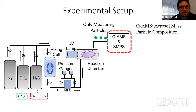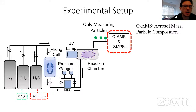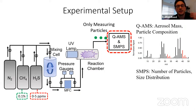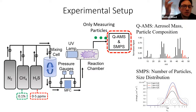The quadrupole aerosol mass spectrometer (QAMS) tells us the aerosol mass — how much particle mass we're making and the total mass — and also the particle composition from the mass spectra, giving an aerosol mass spectrum. The SMPS tells us the number of particles and their size distribution. In my talk I'll mainly focus on the QAMS results.